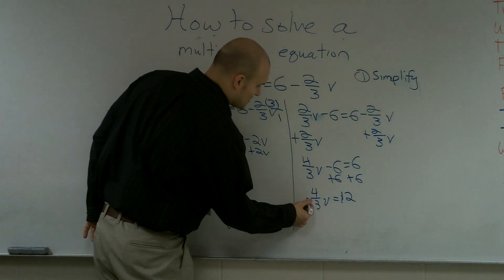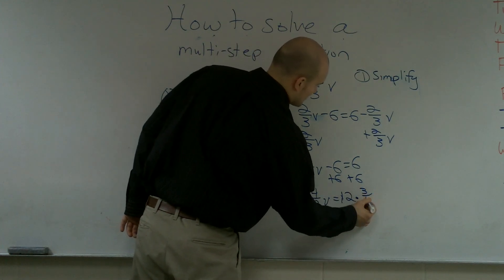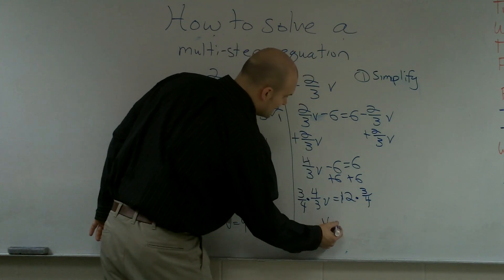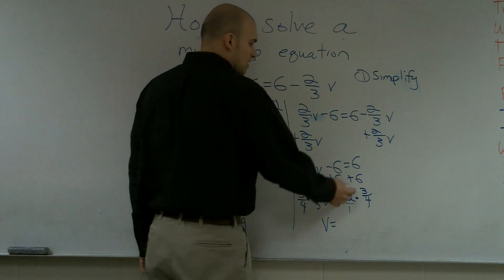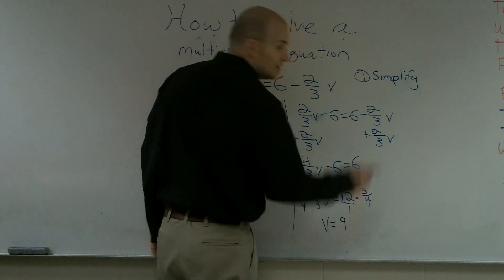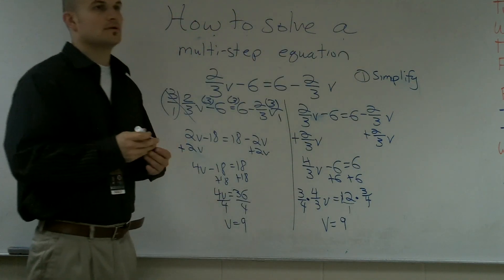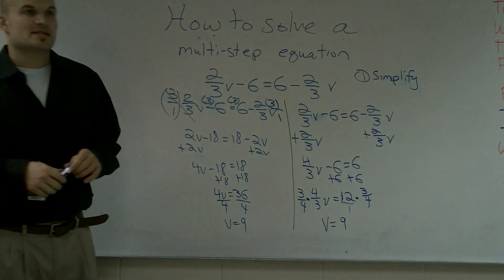So, it is multiplied by the reciprocal. And therefore, you get V equals 12. I'll put it over a fraction. Put it over one. 12 times 3 is 36. 36 divided by 4 equals 9. Can you swap them? No. So, that is how you solve a multi-step equation.